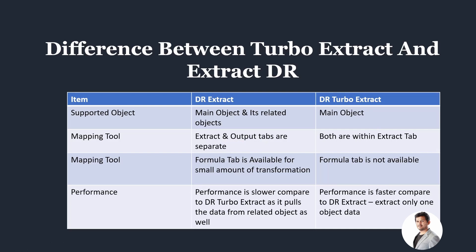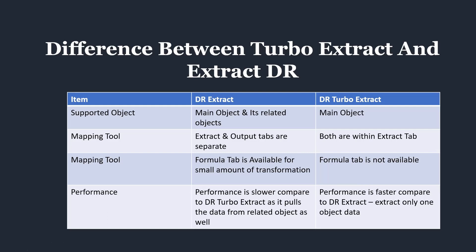In Turbo Extract, you can select which object you want to pull data from and its respective output fields all within the Extract tab. In Dataraptive Extract there is a formula tab available for small transformations, whereas the formula tab is not available in Turbo Extract. Performance-wise, Dataraptive Extract deals with the main object and its related objects, making it comparatively slower, whereas Dataraptive Turbo Extract deals with one object at a time, giving it enhanced performance at runtime.